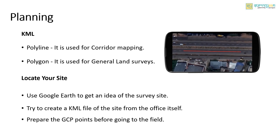The first thing we need to plan is the KML file. KML is a file format used to display geographic data in an earth browser such as Google Earth. KML can be created using a polyline or a polygon. Polyline represents the line feature and it is used in corridor mapping. If you need to mark roads, canals, or linear features, then you can use the polyline to create the KML file. Here in this picture, the KML file is a polyline feature which represents the road.